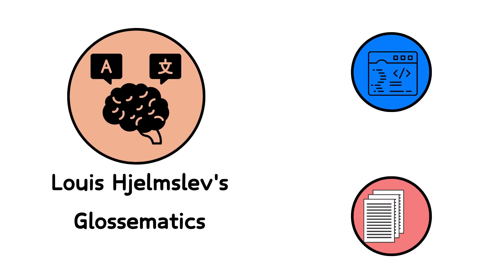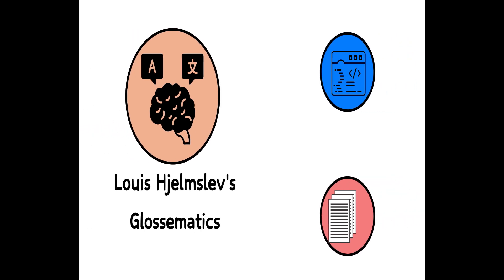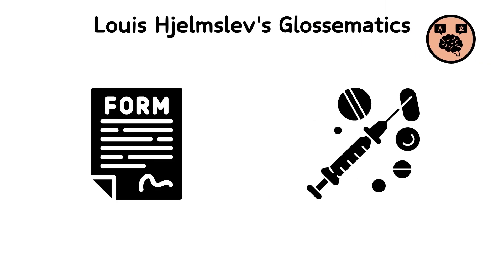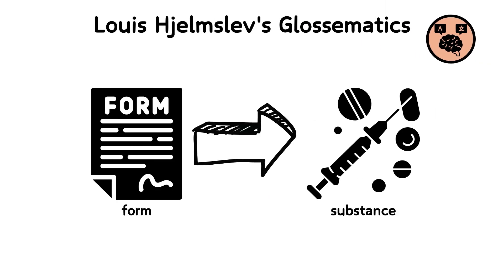Louis Hjelmslev's Glossematics. Louis Hjelmslev, a Danish linguist, introduced a highly formalized approach to language analysis known as Glossematics. His theory is distinct in focusing on the form of language rather than its substance. Hjelmslev argued that language should be studied as a system of signs that operate within their own system, independent of the actual content they communicate. This led to a dual division in his framework: expression and content, both of which can further be divided into form and substance.